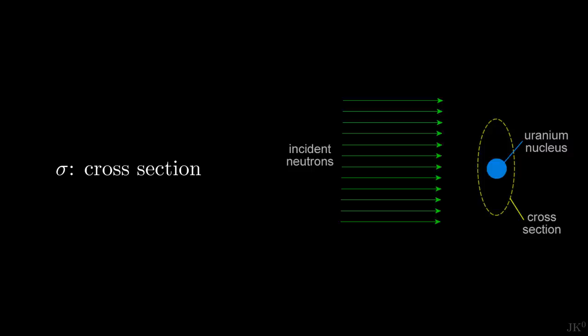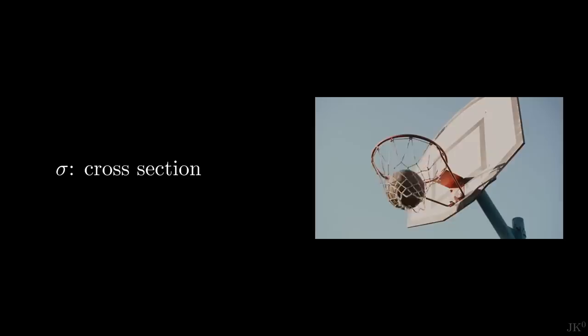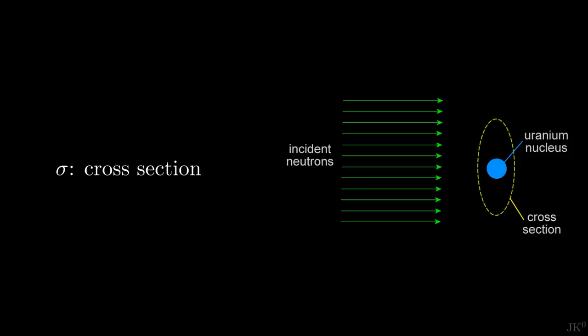As an analogy, imagine that you are playing basketball. The bigger the area of the rim, the more likely it is that you will score. Similarly, the cross section has units of area, a very small but measurable area. There is a cross section for each type of reaction. In particular, we are interested here in fission cross section, which quantifies the probability of a neutron splitting the uranium nucleus.